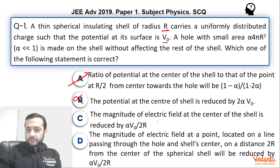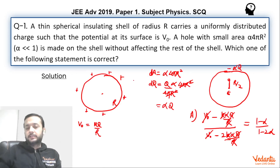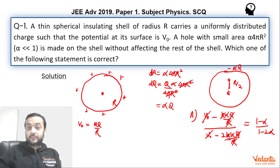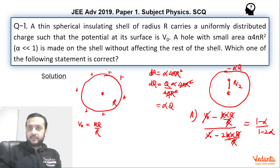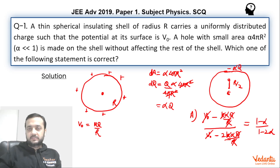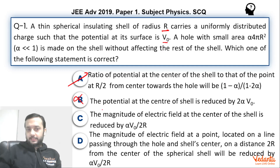Option C states that the magnitude of the electric field at the center of the shell is reduced by αV₀/2R. If we think carefully, what is the magnitude of the electric field at the center of a uniformly charged shell? It is zero. Since magnitude can never be less than zero, there can be no reduction in magnitude. For completeness: originally the field was zero; now due to the −αQ charge the field becomes k × αQ / R², which is actually an increment, not a reduction. So Option C is wrong.